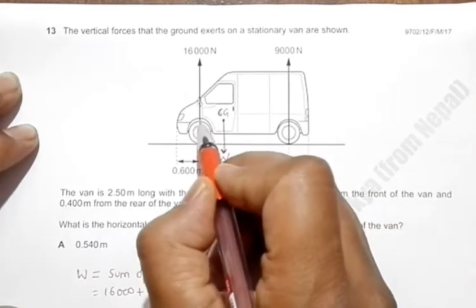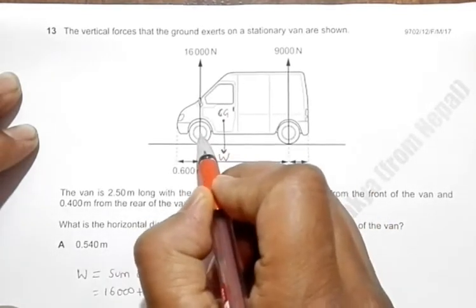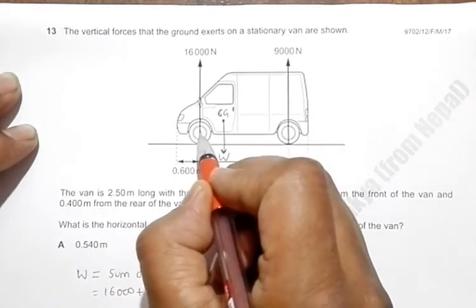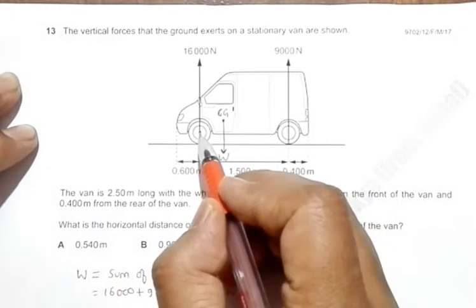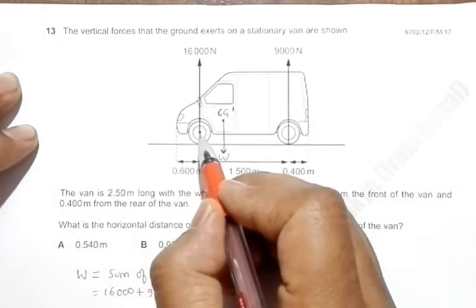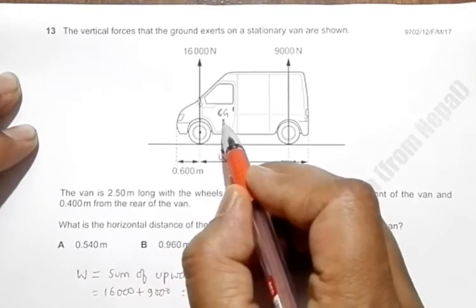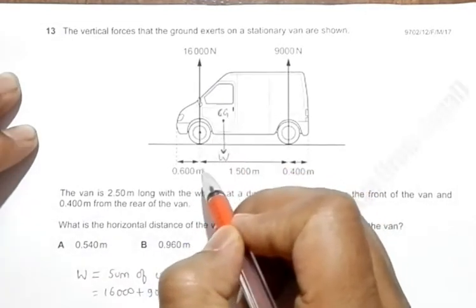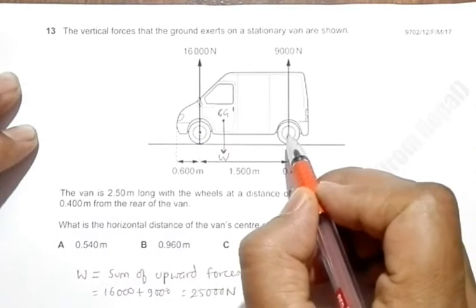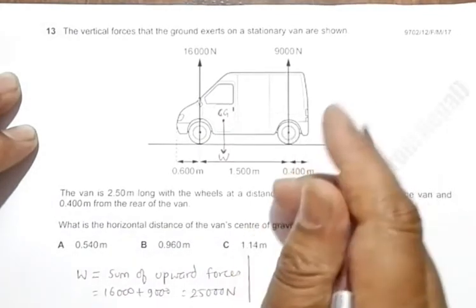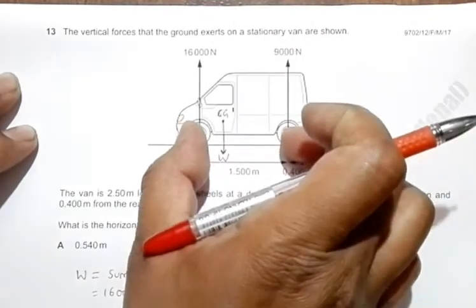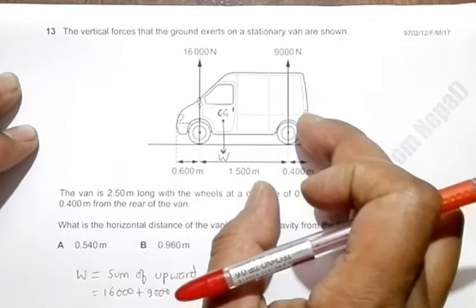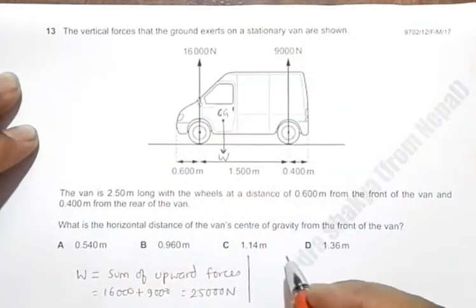Now if I consider this point as the fulcrum, we can consider anything as a fulcrum because the system is balanced. So if I consider this as a fulcrum, then we can calculate the moment or torque about this point. This force W will be trying to move it in a clockwise direction, and at the same time this 9,000 Newton will be trying to move the body in an anti-clockwise direction.